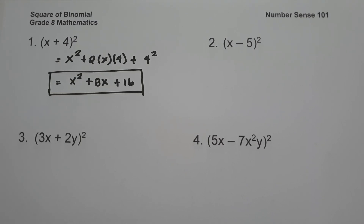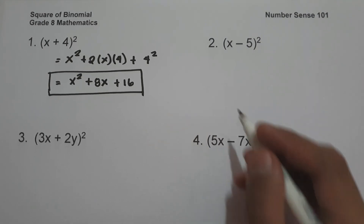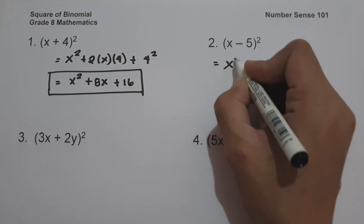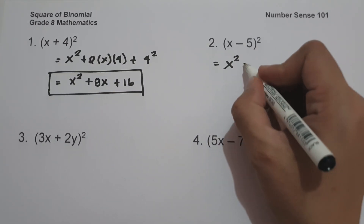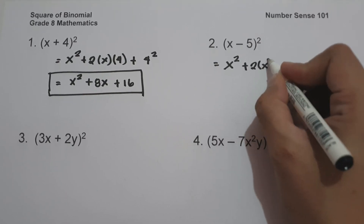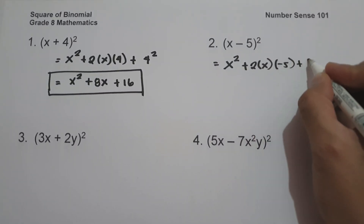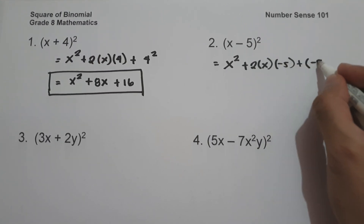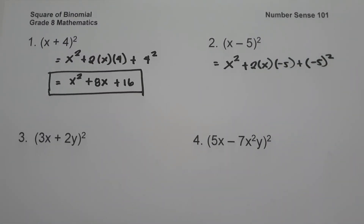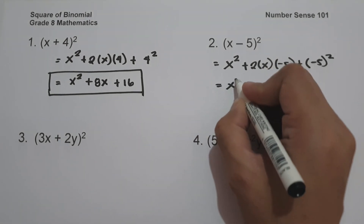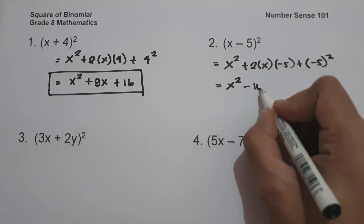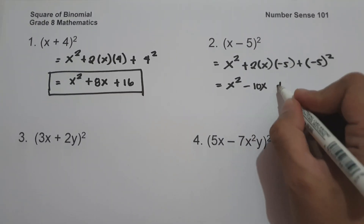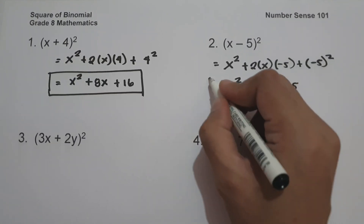On number two, we have the quantity (x - 5) squared. Just like example number one, let us square the first term, that is x², then multiply the first and last term by the constant 2: 2 times x times negative 5, plus the square of the last term, (-5) squared. Simplifying: x² minus 10x plus 25, and this will be our answer.